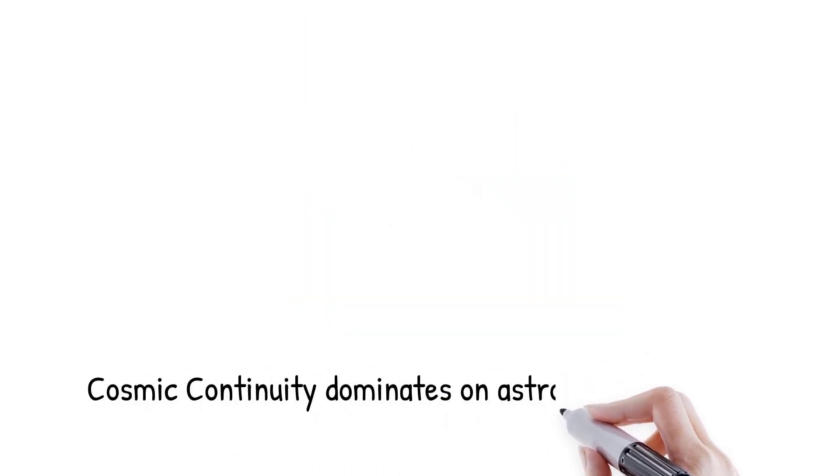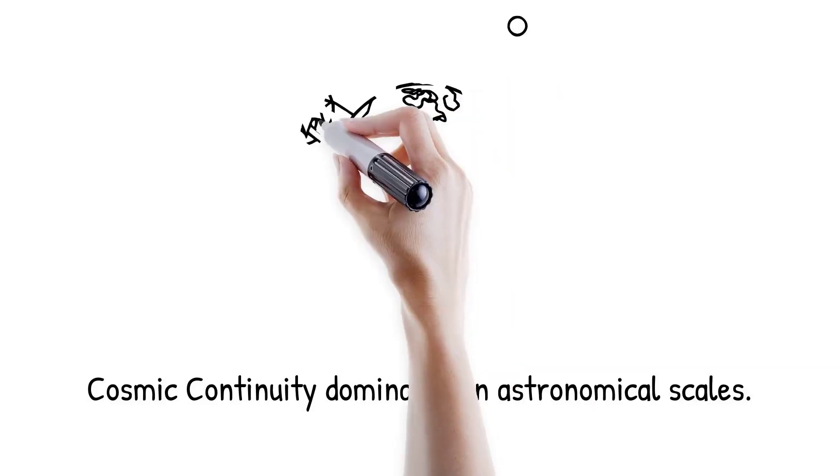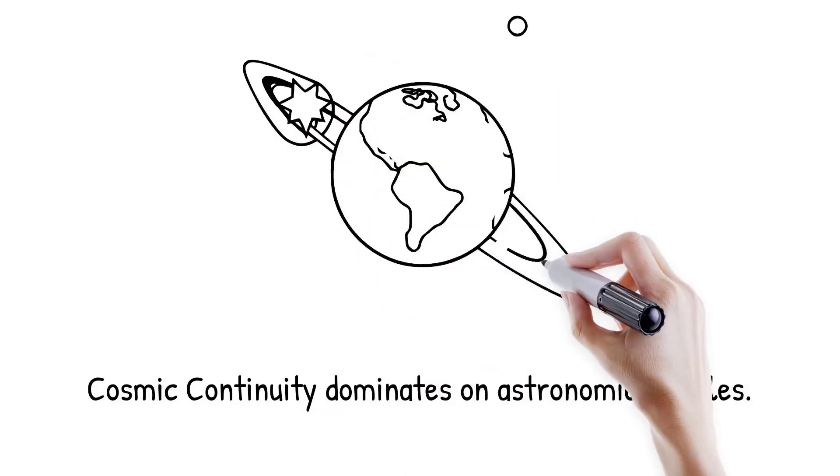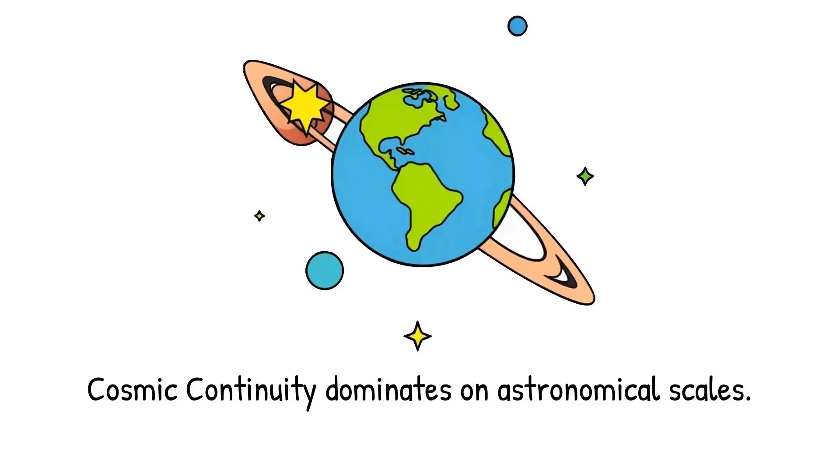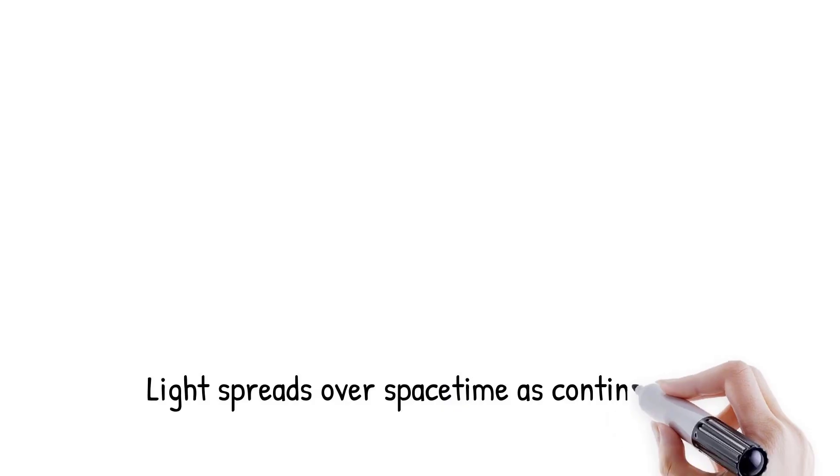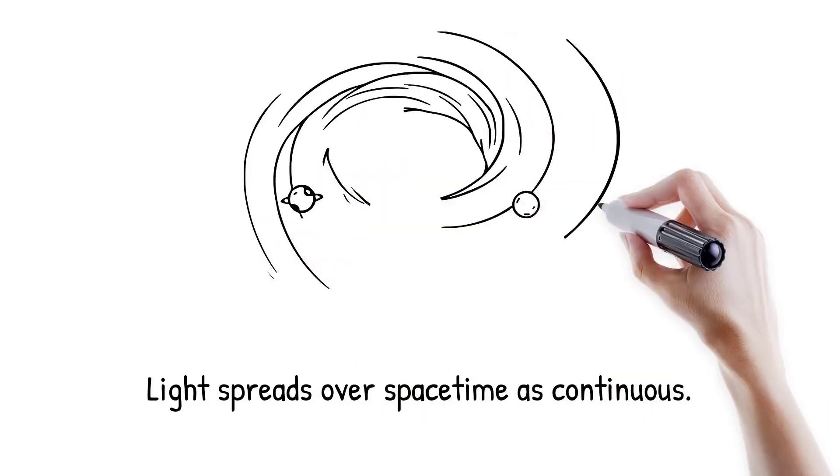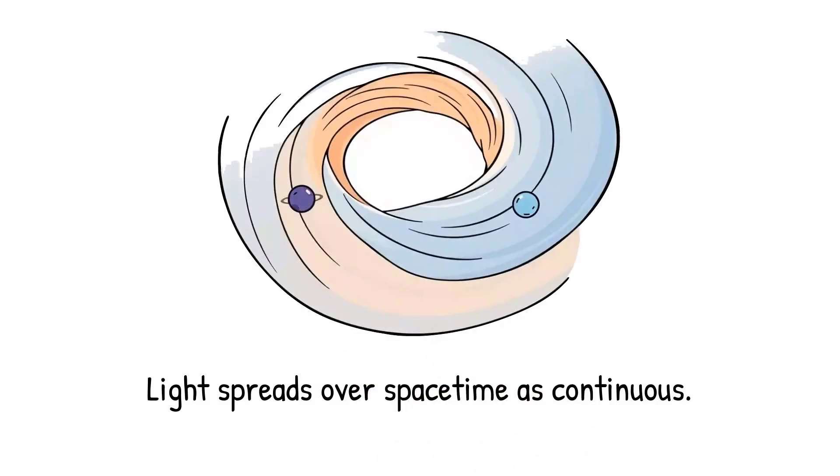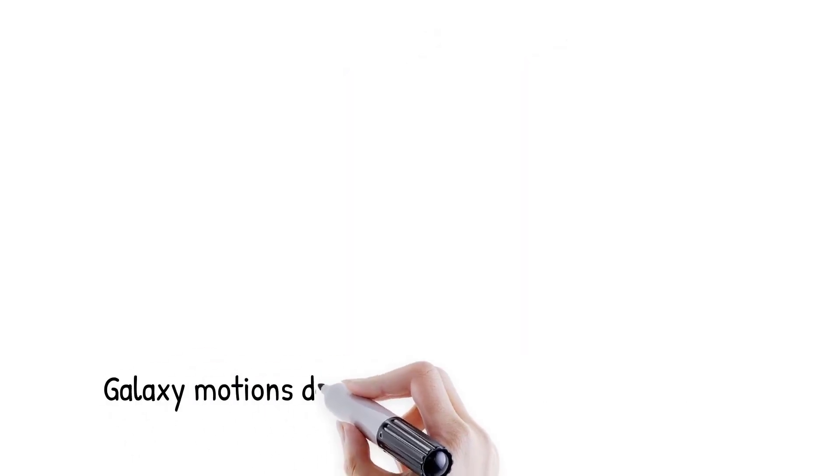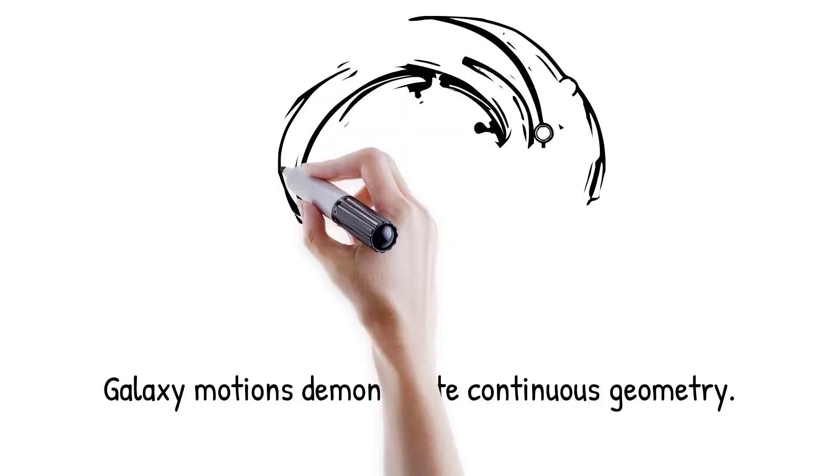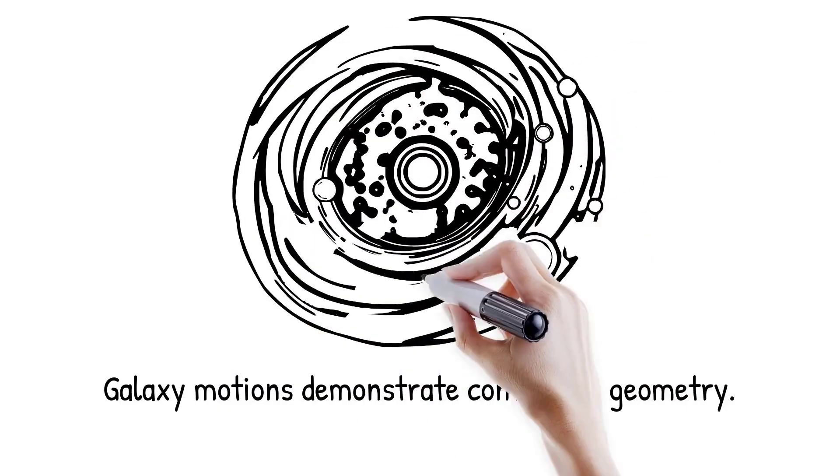On astronomical scales, continuity also dominates our perception. The orbit of planets around stars appears to follow smooth ellipses. Light spreads across billions of light years, as if space-time were continuous. Einstein's general relativity models gravity as the curvature of a smooth fabric. Nothing in the motions of galaxies suggests discreteness. At these scales, reality unfolds in a continuous geometry.